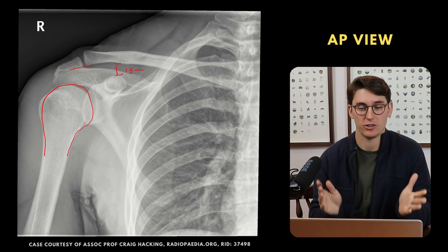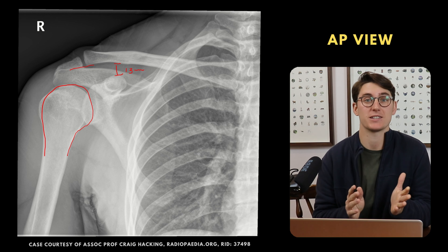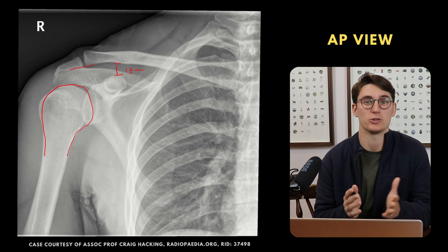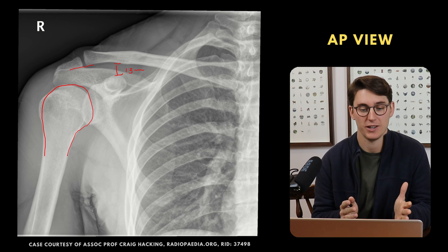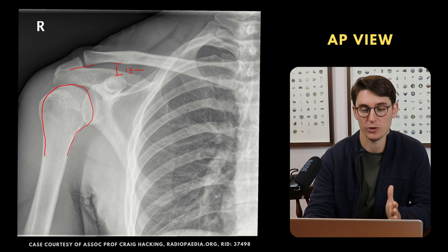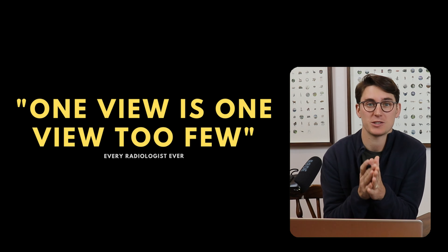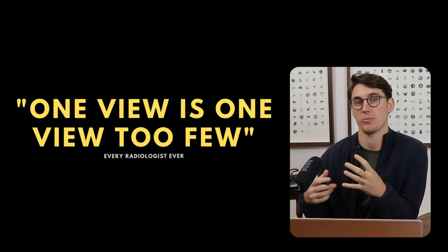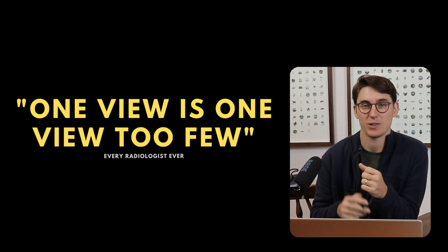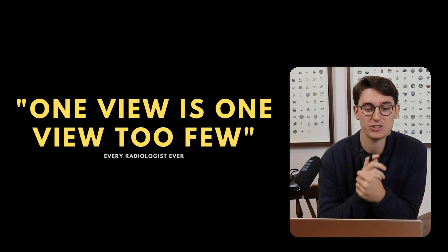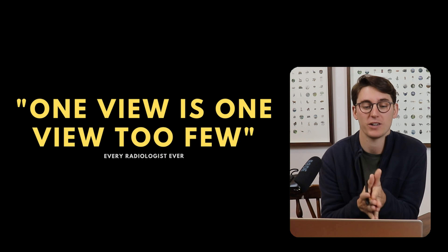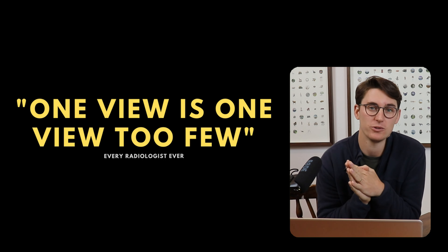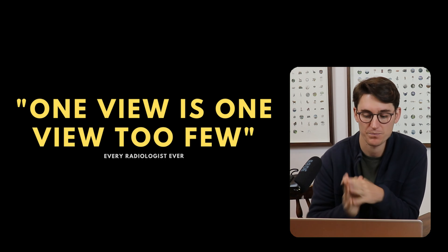We could look at this x-ray and say it's a normal shoulder x-ray. But we can't look at a single view, especially with the shoulder — it's such a complex joint that we need at least two views, and one view is one view too few.